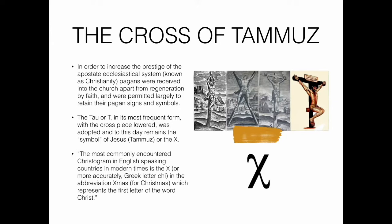The tau, or T, in its most frequent form with the crosspiece lowered, was adopted and to this day remains the symbol of Jesus — or Tammuz. The most commonly encountered crystallogram in English-speaking countries in modern times is the X, or more accurately the Greek letter chi, and the abbreviation 'Xmas' for Christmas, which represents the first letter of the word 'Christ.'